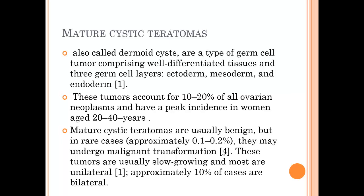Mature cystic teratomas account for 10 to 20% of all ovarian neoplastic lesions, with a peak incidence from 20 to 40 years. They are usually benign, but in rare cases — 0.1 to 0.2% — they may undergo malignant transformation. These tumors are usually slow-growing and most are unilateral, but may be bilateral in about 10% of cases, though in practice I see higher rates of bilaterality.